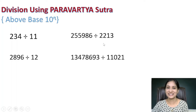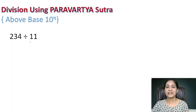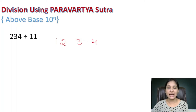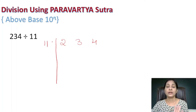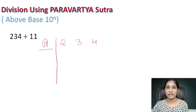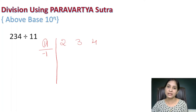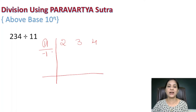Let us solve 234 divided by 11 using Paravartya Sutra step by step. First, write the dividend 234 giving some space, and write the divisor 11. Then find the transpose of the number except the leftmost digit — the leftmost digit is 1, so leave that. Take the other digit, which is 1, and change its sign. So write minus 1 below the given number.